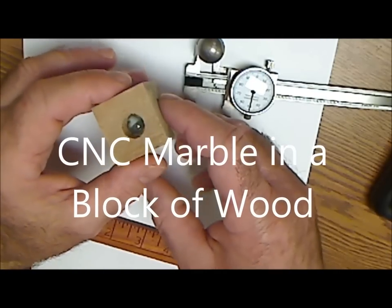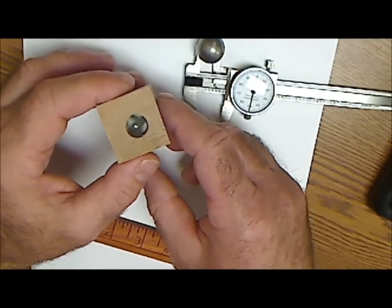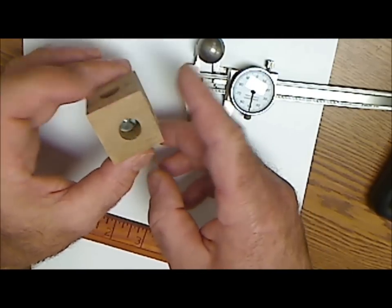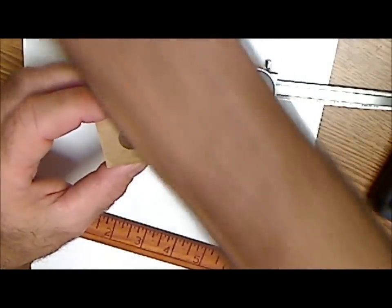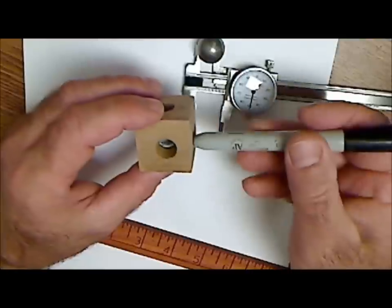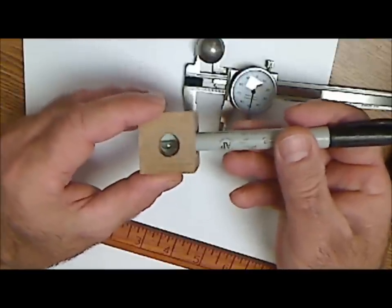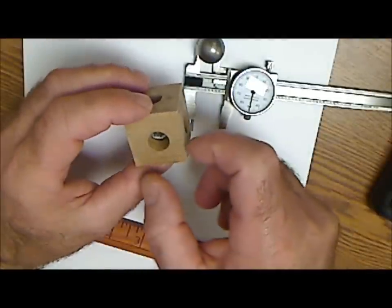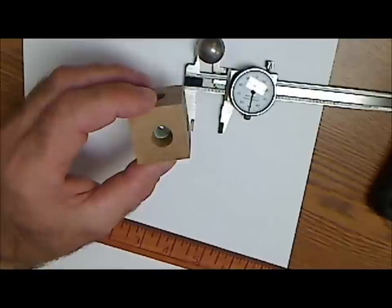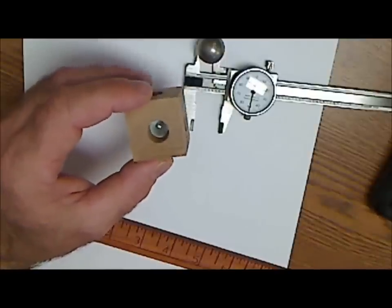This is a great project: marble inside a wooden block. As you can see, there's a marble stuck inside of that block and the marble can't get out or get in. It's kind of a tricky project. The diameter of that marble is less than the diameter of that hole, but it still fits in there, and I'll show you how.